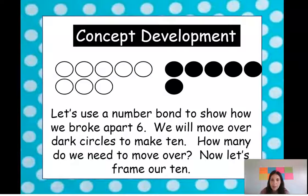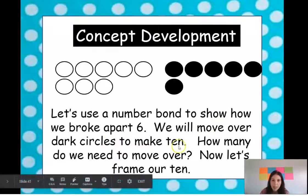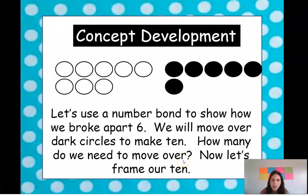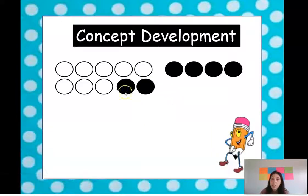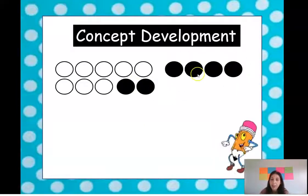Okay let's use a number bond to show how we broke apart six. We will move over dark circles to make ten. How many dark circles do we need to move over? Two. So we have two and then we have four.